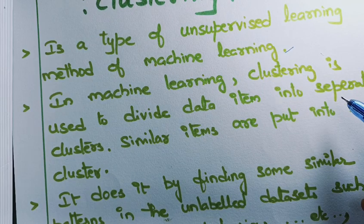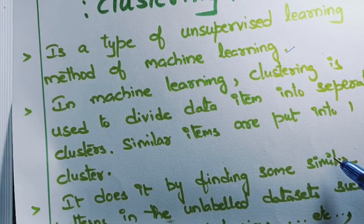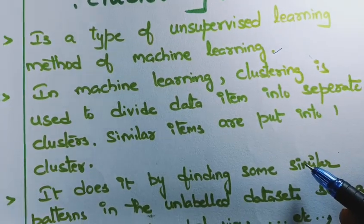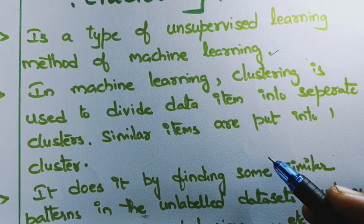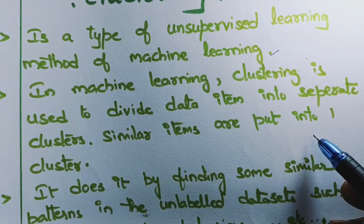In machine learning, clustering is used to divide data items into separate clusters. When grouping data items, similar items are put into one cluster.